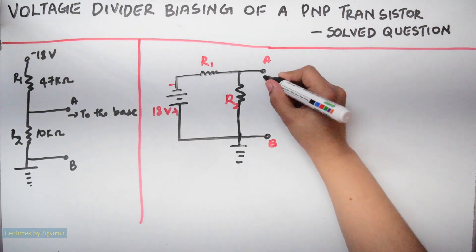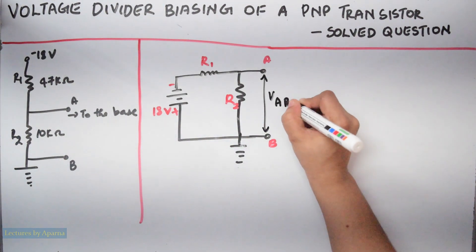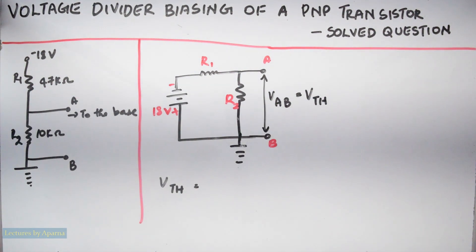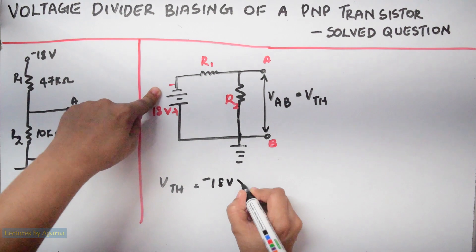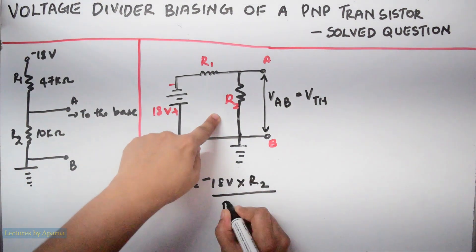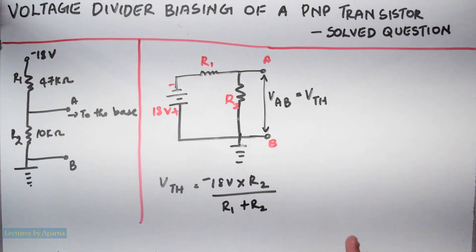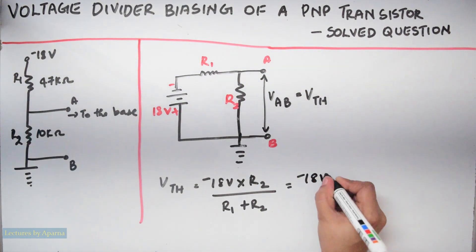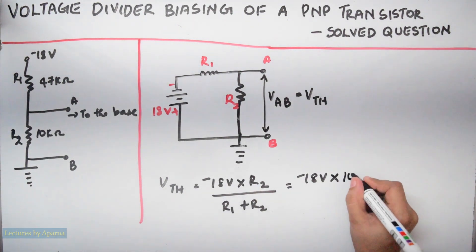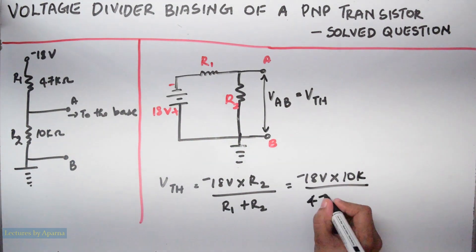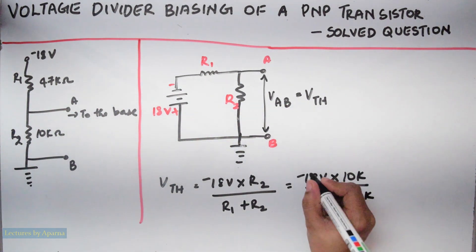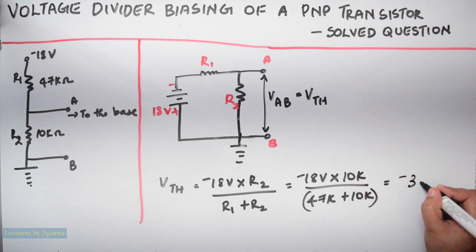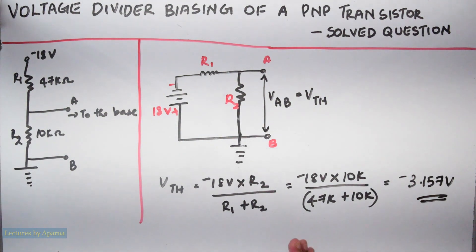Now we have to find VAB. This VAB is the Thevenin's voltage or VTH. VTH is equal to minus 18V into R2 divided by R1 plus R2 — using the voltage division rule. Substituting the values: minus 18V into R2 (10K) divided by R1 (47K) plus R2 (10K). Simplifying, we get minus 3.157V. So this is VTH.